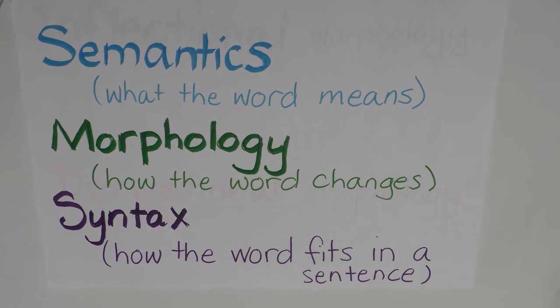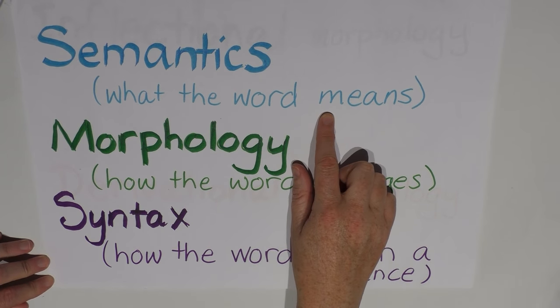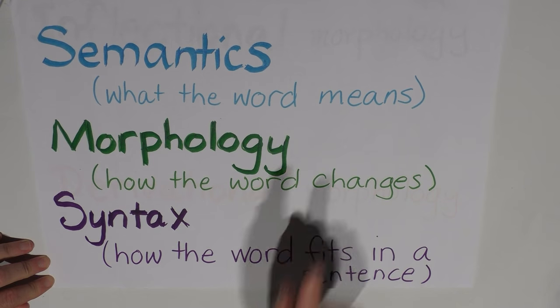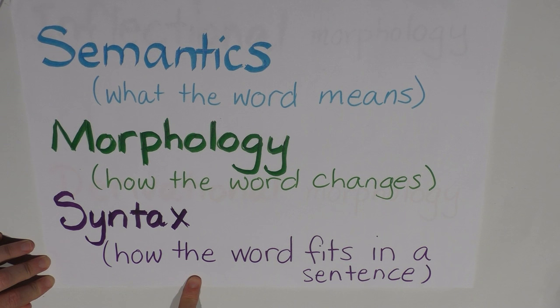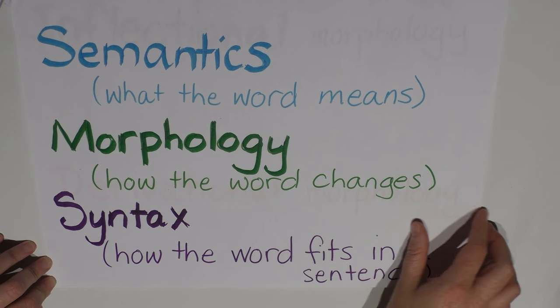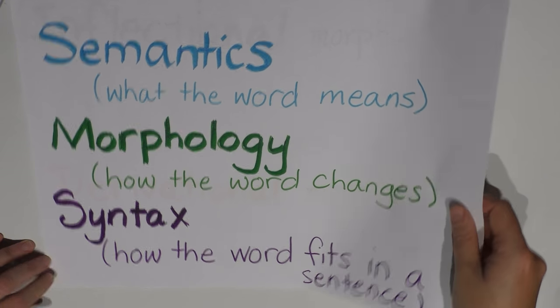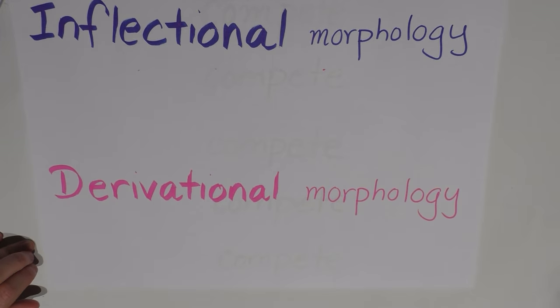These are semantics, what the word means, morphology, how the word changes, and syntax, how the word fits in a sentence. When we look at the morphological features of a word class, these features can be divided into two types, inflectional morphology and derivational morphology.